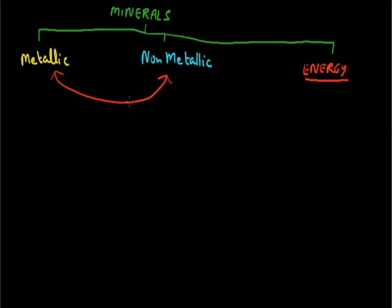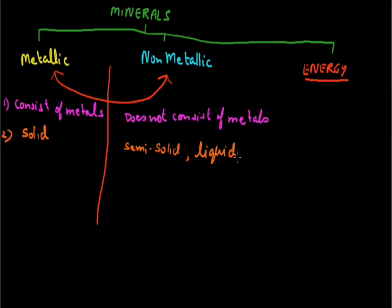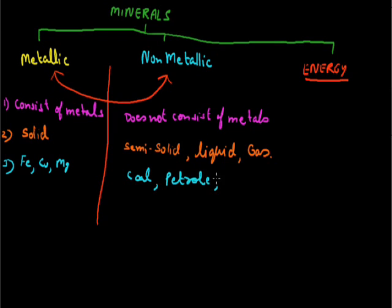Let us understand metallic and non-metallic minerals by comparing them. Metallic minerals consist of metals, while non-metallic minerals do not consist of metals. Metallic minerals are solid in nature, while non-metallic minerals are semi-solid, liquid, or even in gaseous form. Examples of metallic minerals include iron, magnesium, etc. Coal, petrol, salt, and marble are examples of non-metallic minerals.